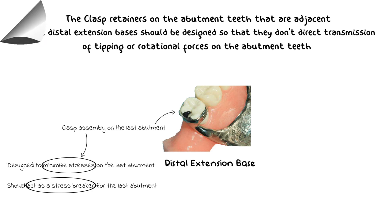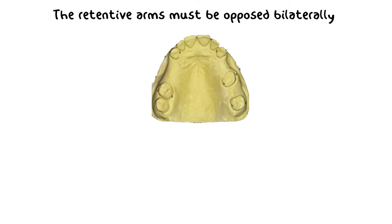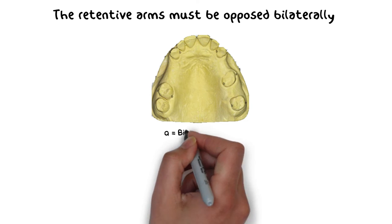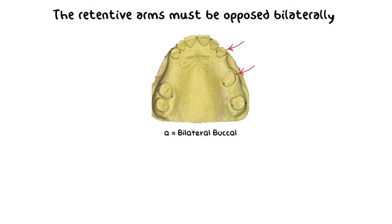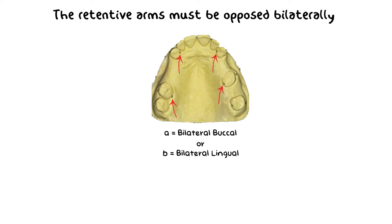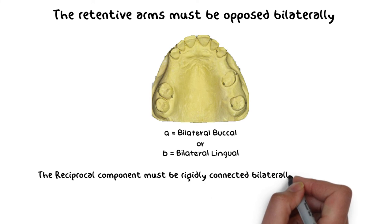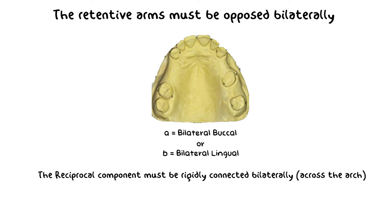The retentive clasp arms should be opposed bilaterally, meaning they must have a cross-arch opposing component. If there is a buccal retentive component on one side, it should be opposed by a buccal retentive component on the other side of the arch, providing cross-arch stability. Similarly, the reciprocal component must also be rigidly connected bilaterally with a cross-arch component to provide reciprocation. Both the retentive and reciprocal components should have a cross-arch opposing component to stabilize the overall clasp and denture.